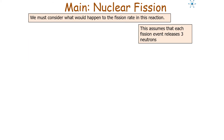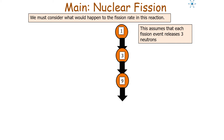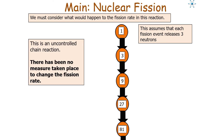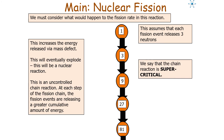We must consider what happens to the fission rate in a chain reaction. If each fission event releases three neutrons, starting with one neutron you get three, then nine, then 27, then 81 — and so on. This is an uncontrolled chain reaction with no measures to change the fission rate. We call this a supercritical chain reaction: at each step the energy released by the mass defect is increasing, and eventually so much energy is produced that the reactor will explode — a nuclear explosion.